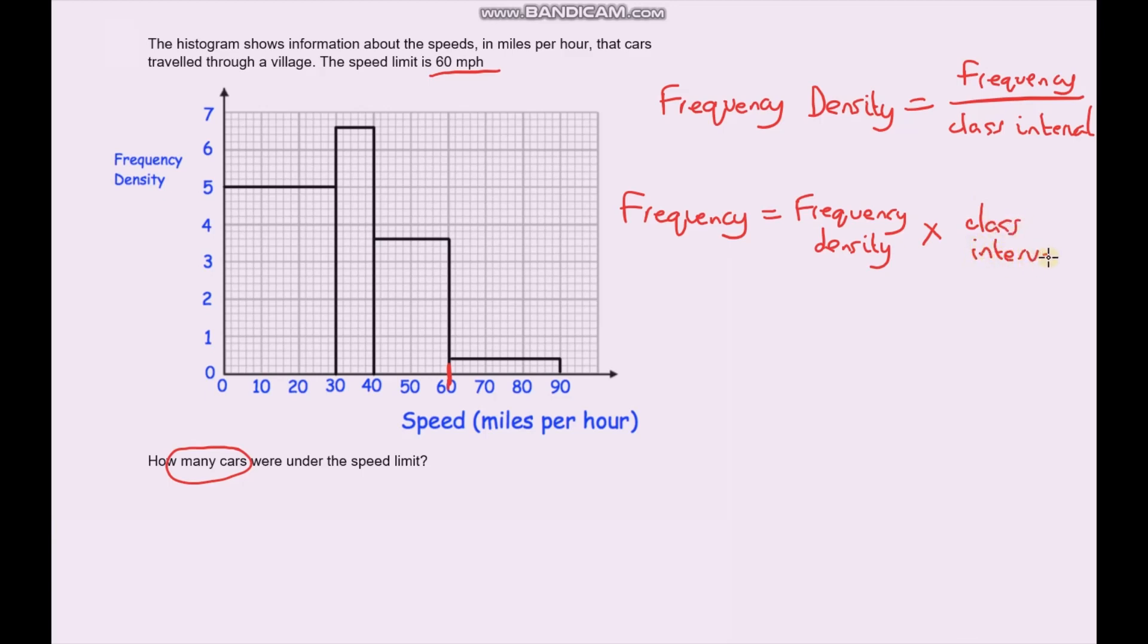All I've done is I've just rearranged this formula to make the frequency the subject. Now, the frequency density, well that is just the height of the bar. And the class interval, that is just the width of the bar. So hopefully you know that whenever we times the height by the width, that just gives us the area of our shape. The area of a rectangle is just base times height. In this case, our base is the class interval, and our height is the frequency density. So let's calculate the areas of each of these bars, and that will give us the frequency.